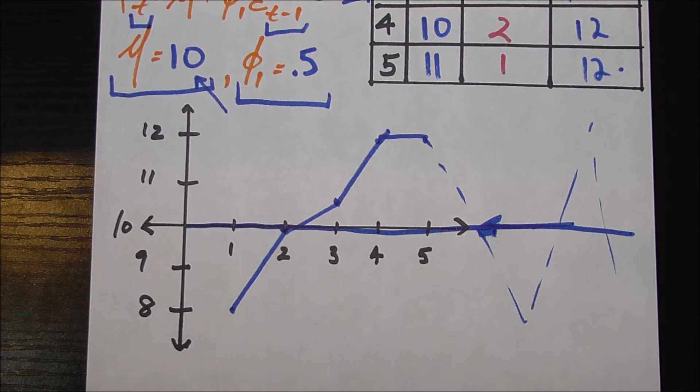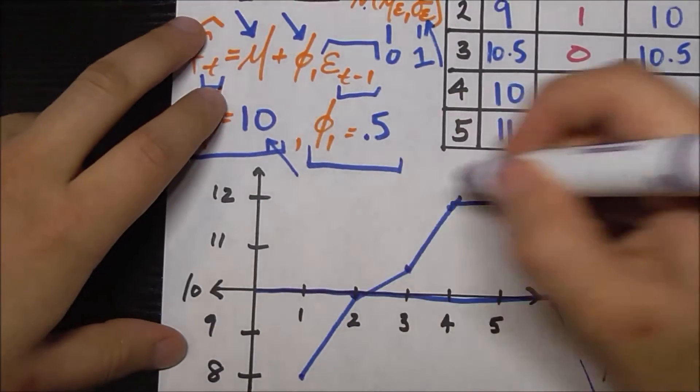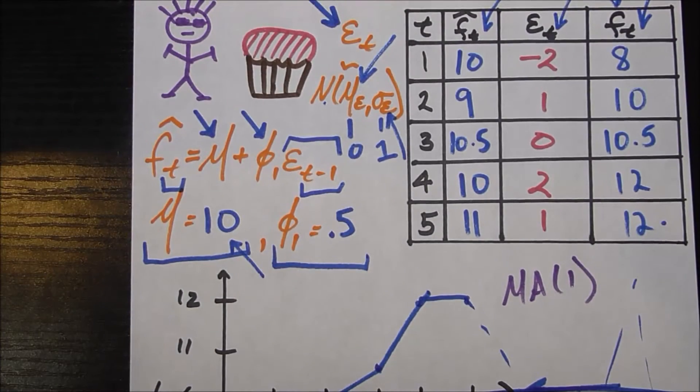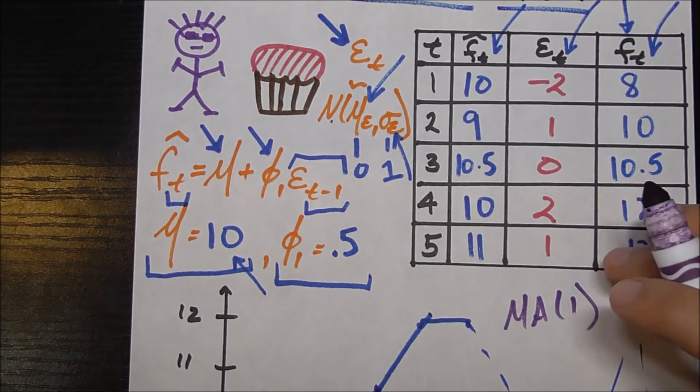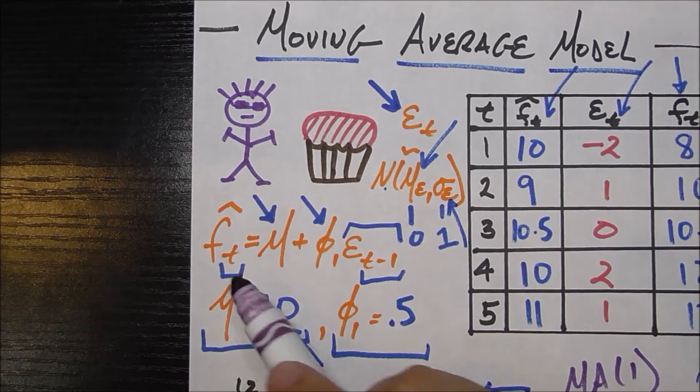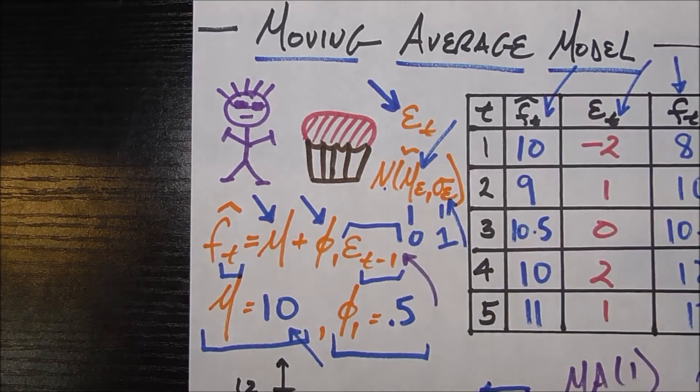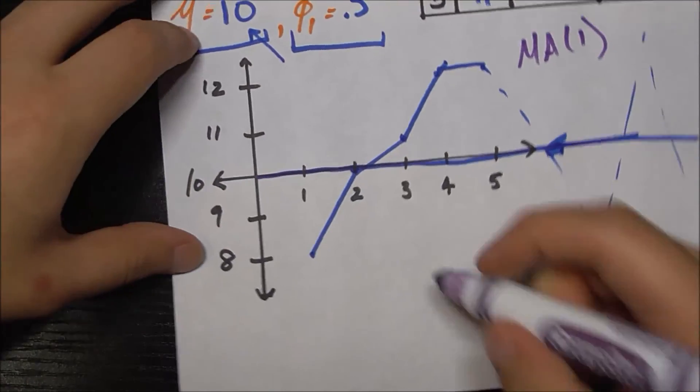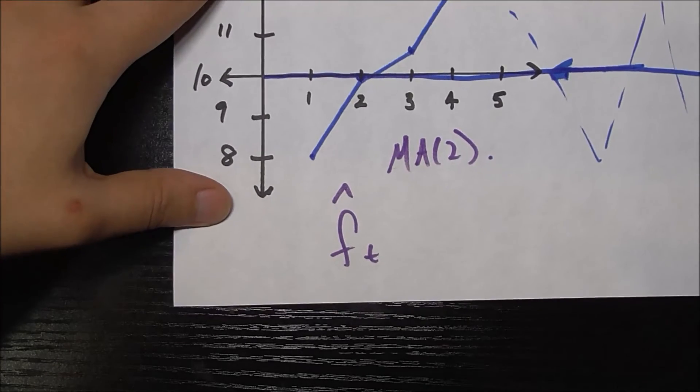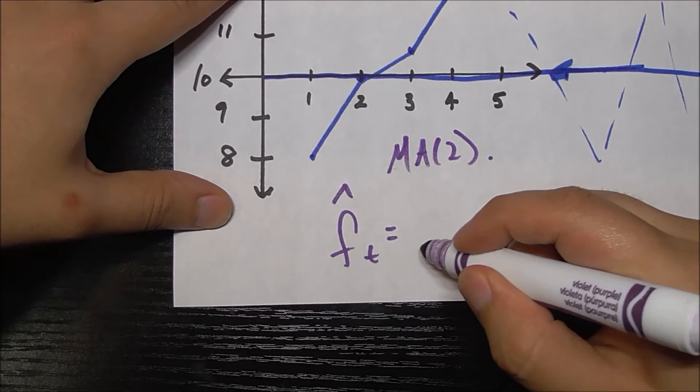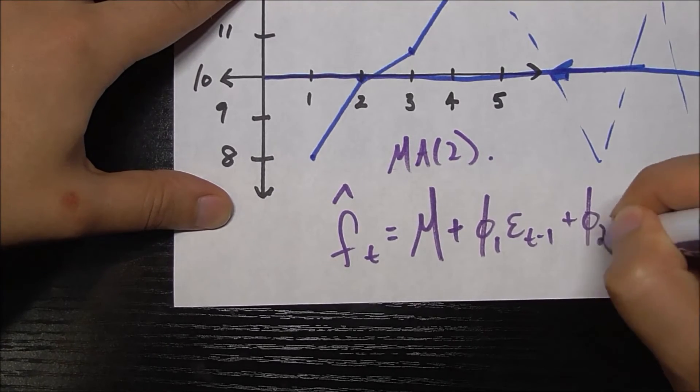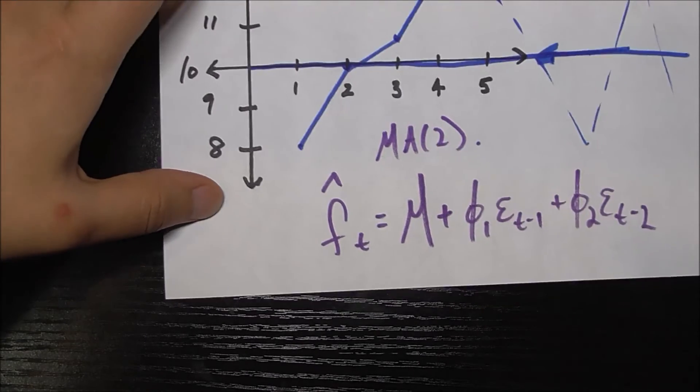Now to get into a few more specifics here, this is the easiest type of moving average model, often called the MA, which is moving average one model. And you can probably guess why, because we took one error term into account, which means that in making your estimate of cupcakes for this month, you are only using information about the error from last month. Now, you can probably already guess what an MA2 model would look like, right? An MA2 model would look like your predicted number of cupcakes that you need this month is going to be mu plus phi one, the error from last month, and phi two, some other coefficient times error from two months ago.